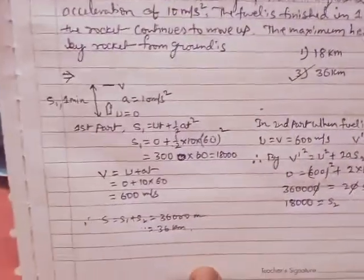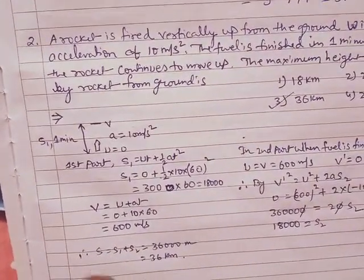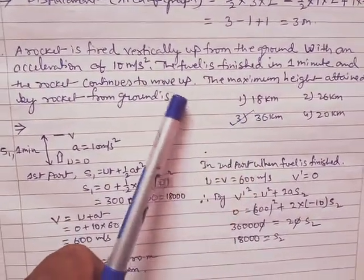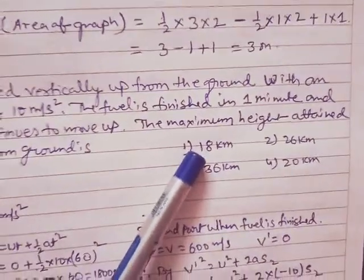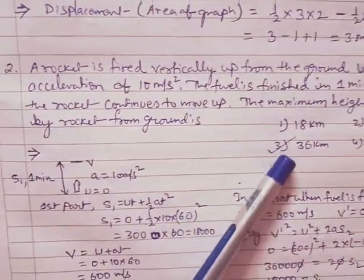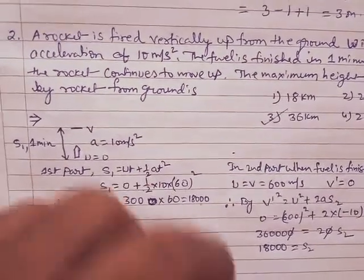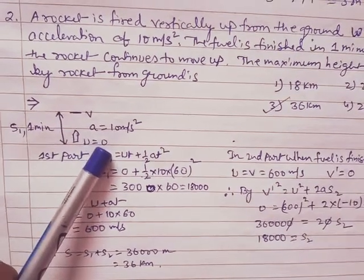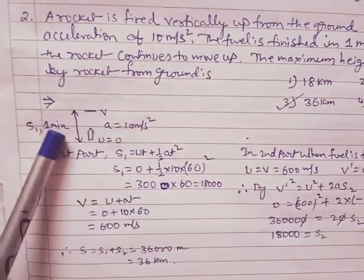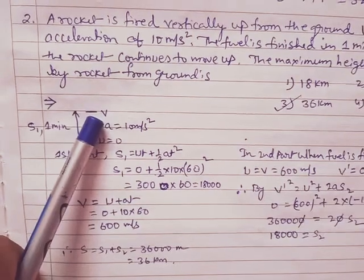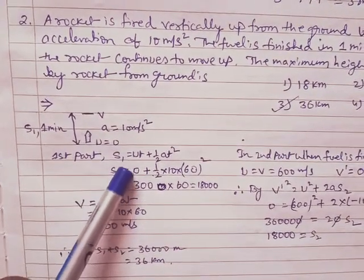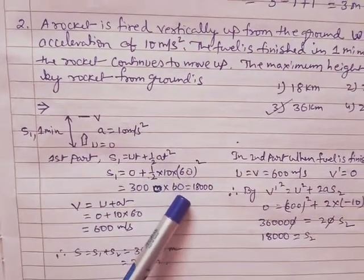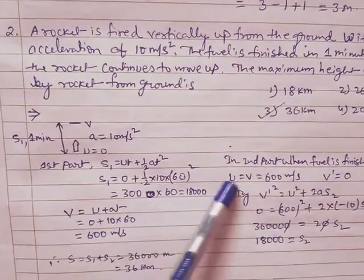If you come with question number 2, in the question number 2 it was written that a rocket is fired vertically up from the ground with an acceleration of this. The fuel is finished in one minute and the rocket again moves up. There are two parts. When the rocket is moving up, definitely initial is zero with the acceleration. And in one minute he reached some point. So let me find the displacement, s is equal to ut plus half of at square. If I will apply, definitely a is your 10, answer is 1800.